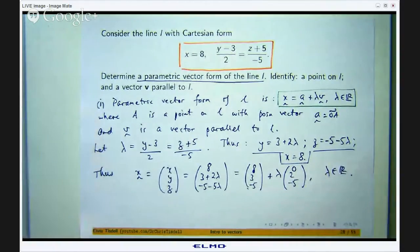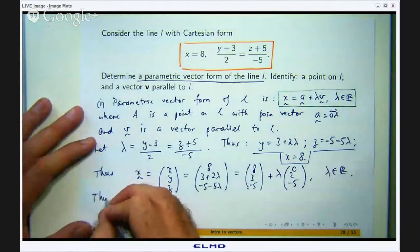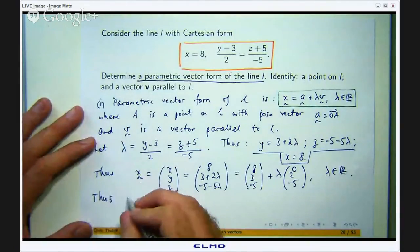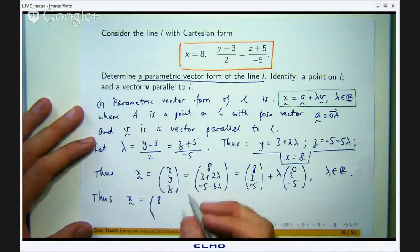So our parametric vector form is just 8, 3, –5 plus lambda times 0, 2, –5.